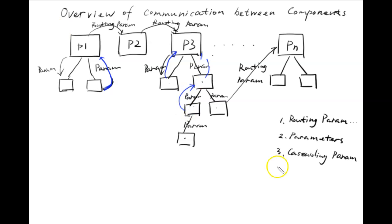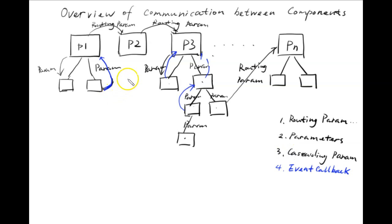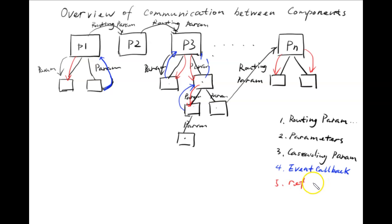These blue ones are event callbacks. Another type of communication is when you want to tell your child about something — when you call your child because something interesting happened and you ask your child to do something. That kind of communication is when the parent calls the child. We reference the child component, and then we can call a method on that child component directly.